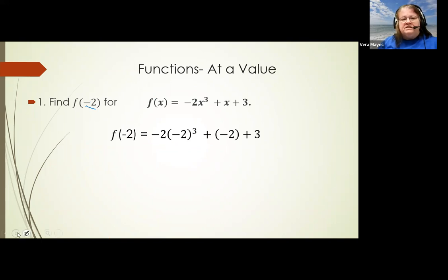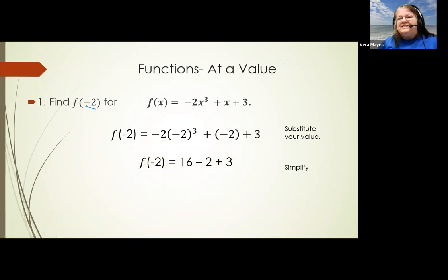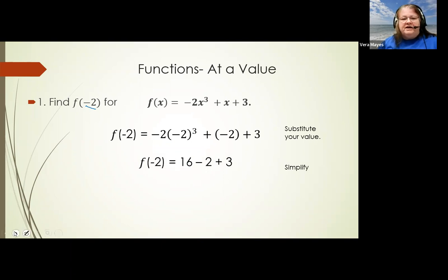The important thing is to make sure you're doing things in the right order. We know that exponents come before multiplication in the order of operations, so you need to deal with negative two to the third power first. When you do that, you get negative eight, and then negative eight times negative two turns it back positive. Then all we have to do is simplify and add all the numbers, and we get a value of 17.